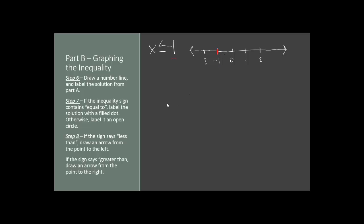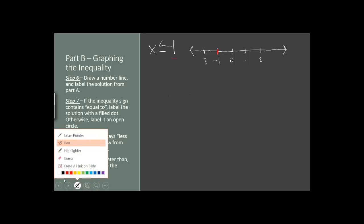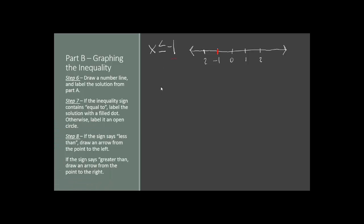Now we check to see if the inequality sign has an equal to. If you have a sign that has an equal to — either less than or equal to, or greater than or equal to — we're going to label the point that we found with a filled-in dot. However, if it just said less than or greater than without the equal to, we're going to use an open circle. Our answer does have the equal to, so we're going to draw a big red dot right on top of that number.